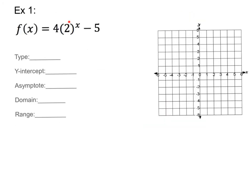Let's do two examples together. In this problem, f(x) = 4(2^x) − 5. The base is 2 — it's the number holding the x — and since 2 is greater than one, this is a growth. The horizontal asymptote is at y = −5, because −5 is the number next to the base. When writing the horizontal asymptote, always write it as y equals that number.